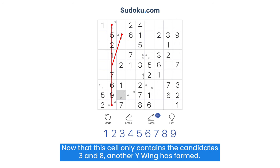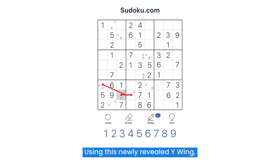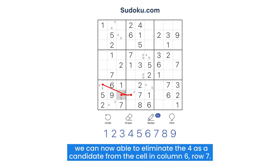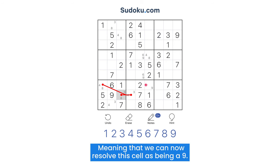Now that this cell only contains the candidates 3 and 8, another Y-Wing has formed. Using this newly revealed Y-Wing, we can now eliminate the 4 as a candidate from the cell in column 6, row 7, meaning that we can now resolve this cell as being a 9.